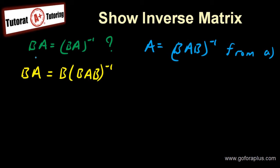So BA, BAB inverse. Now if I replace it right here and I apply this minus 1 to each matrix here, so I'll get B minus 1, A minus 1, B minus 1.